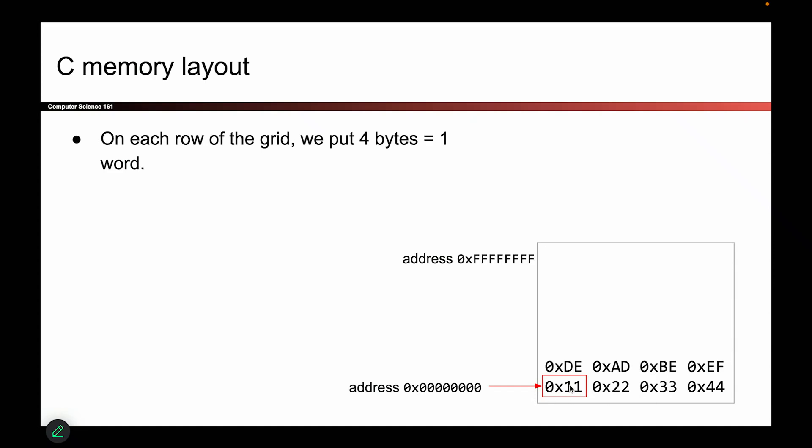For example, this byte here, that's at address 0. This byte is at address 1. This byte is at address 4, and so on.